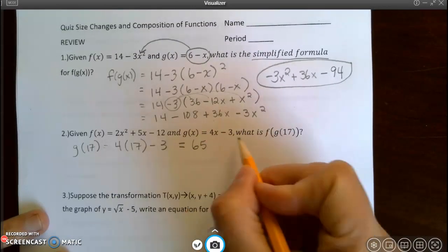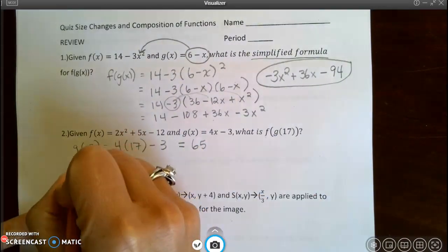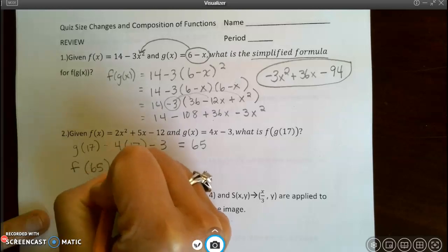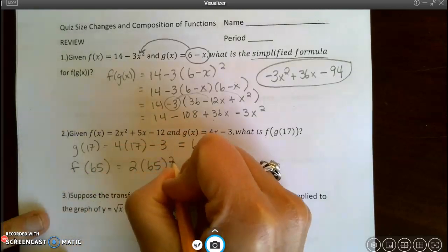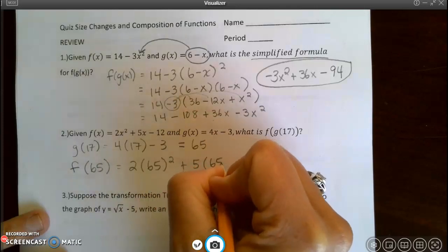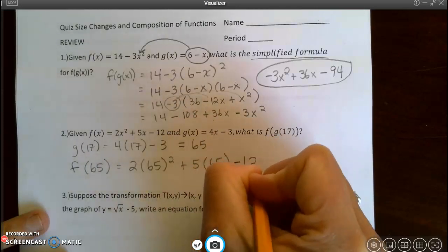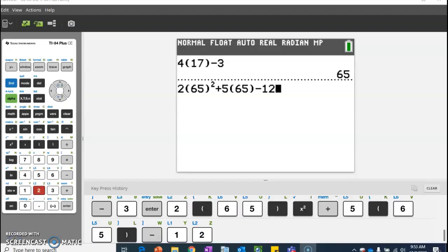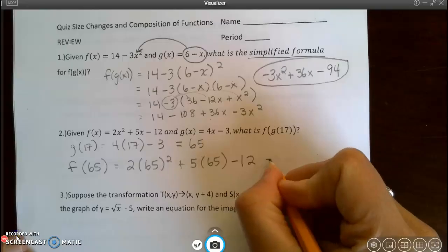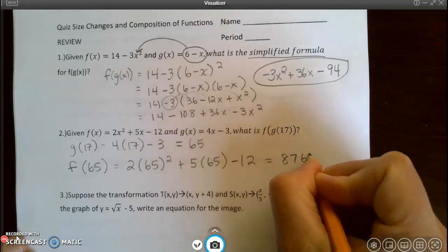Now I need to take that answer and put it into the f function. So I'm going to do f at 65. So that's going to be 2 times 65 squared plus 5 times 65 minus 12. I'm going to go back to my calculator. Notice I always type it into a calculator the same way I wrote it on my paper. And I get 8,763.